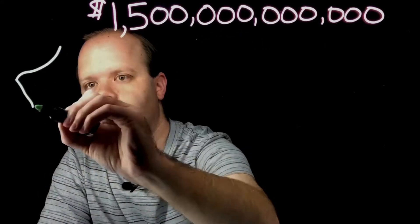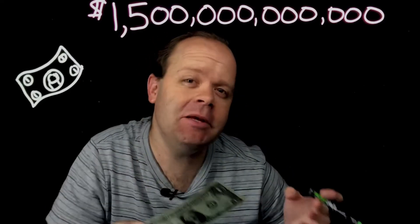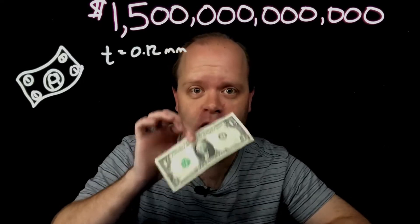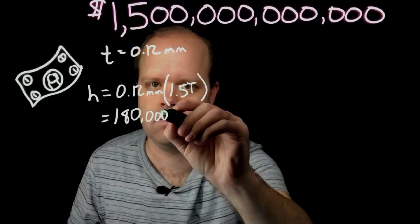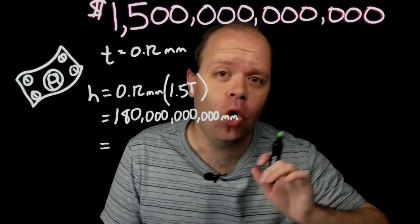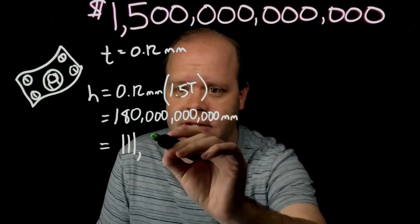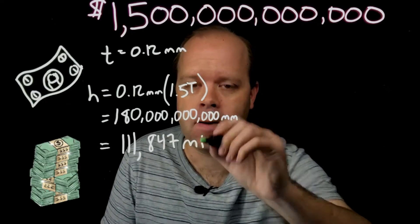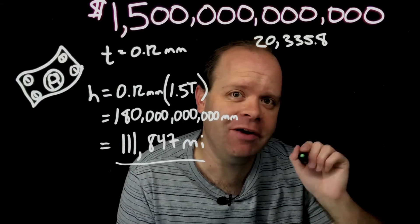Let's have a little bit of fun with this number. The thickness of a $1 bill is approximately 0.12 millimeters. If you stacked $1.5 trillion like this, it would create a tower 180 billion millimeters, or 111,847 miles high.